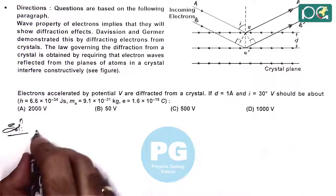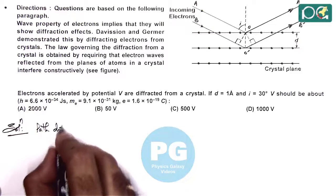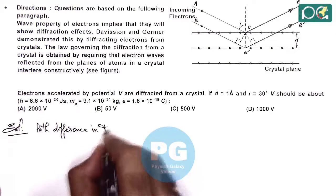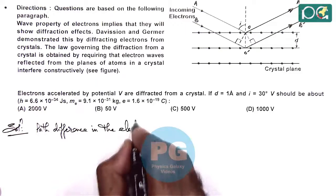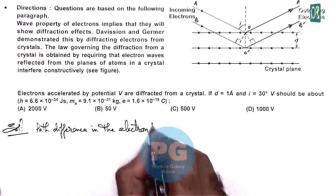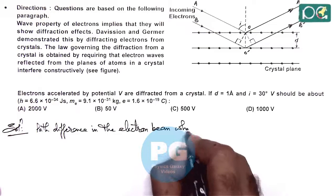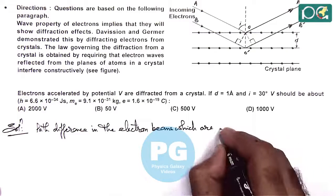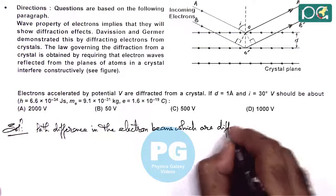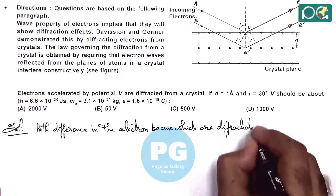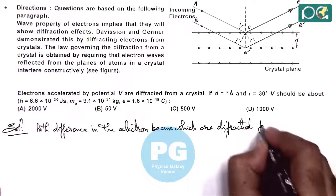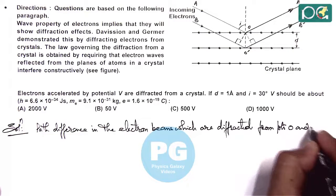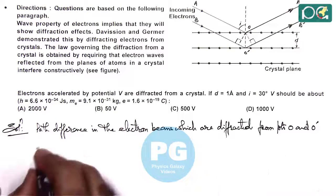Then we can see path difference in the electron beams which are electron beams which are diffracted from points O and O dash.